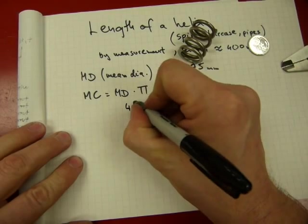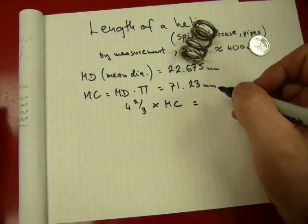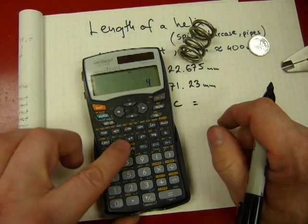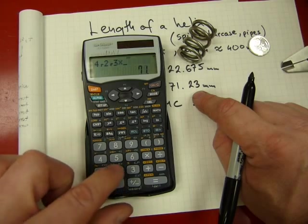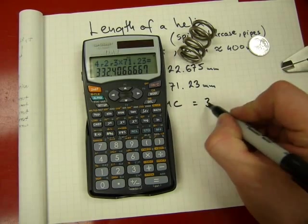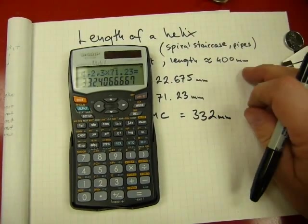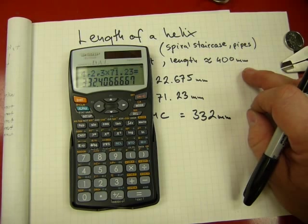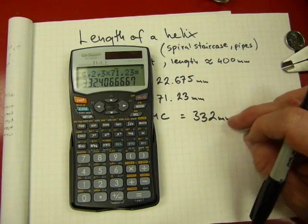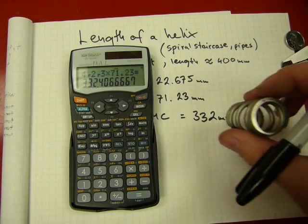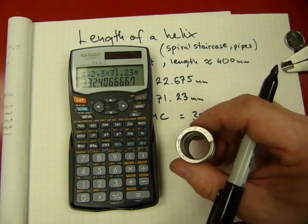4 and 2/3 times mean circumference is 4 and 2/3 times 71.23 equals 332 millimeters. Quite different from my initial approximation with the tape measure, which was around 400 millimeters. Now I only have 332 millimeters for the length of coil because we used the mean diameter, not just measured along the outside of it.